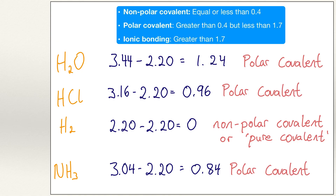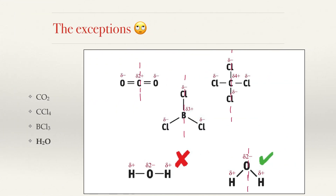Fluorine is the most electronegative atom in the periodic table. There are always exceptions in chemistry. Some molecules, even though they give a polar covalent result when using electronegativity values, are actually nonpolar. The reason is due to the molecules being symmetrical — the centre atom is delta positive, whereas the surrounding atoms are delta negative in a symmetrical fashion, and the charges cancel each other out. Water is polar. If water were linear and not V-shaped, then it would not be a polar molecule.